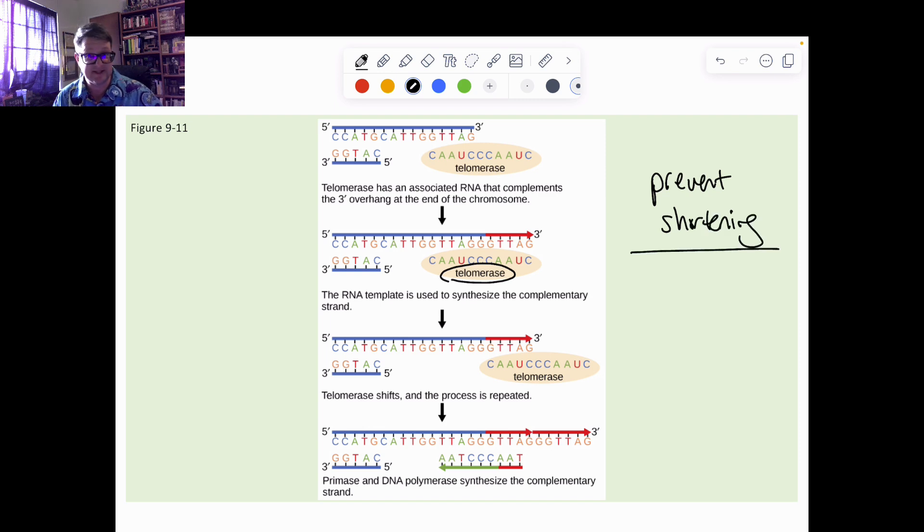We see this in us, in humans, in germ cells. More specifically, germline cells. So these are going to be the cells that will eventually give you sperm and eggs.